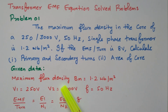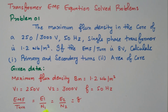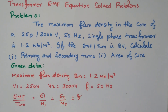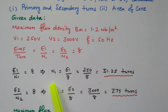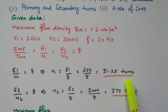Based on the given data, Bm = 1.2 Wb/m², V1 = 250V, V2 = 3000V, frequency = 50 Hz, and EMF per turn = 8V, which equals E1/N1 = E2/N2. From EMF per turn: E1/N1 = 8, so N1 = E1/8 = 250/8 = 31.25 turns. By rounding off, you can take N1 as 31 or 32 turns.